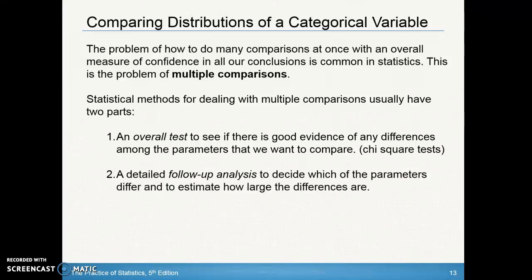The important thing after doing the overall test is to do a detailed follow-up analysis to decide which part of the distributions differ and how large the differences are. Remember with our chi-square goodness of fit test, we looked at which part contributed most to the chi-square statistic — which one gave us the largest difference, furthest away from the expected value. You always want to do a follow-up analysis whenever you reject the null hypothesis.